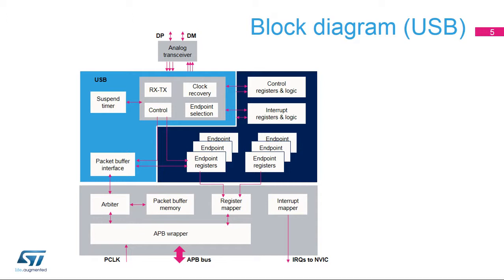The USB interrupt goes to the Cortex processor to signal various USB events. The AHB peripheral bus, or APB, enables read-write access of the controller. Other key elements are the packet buffer memory and the suspend timer, allowing low power operation.